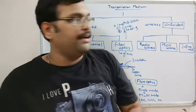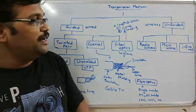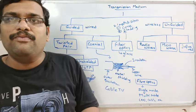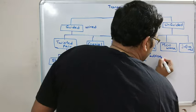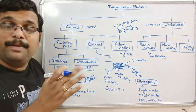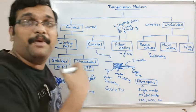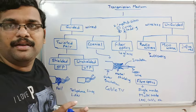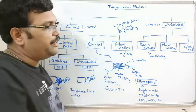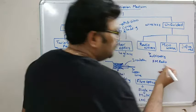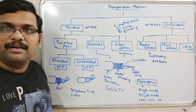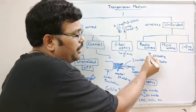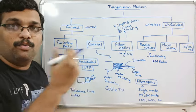Coming to unguided — wireless transmission media. The first is radio waves, mainly used in multicasting, where there is only one sender and multiple receivers. The data propagates in all directions without any security, so any receiver can pick up the signal. The best example for radio waves is FM radio.